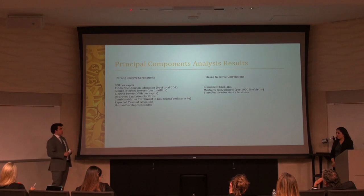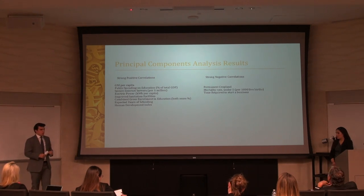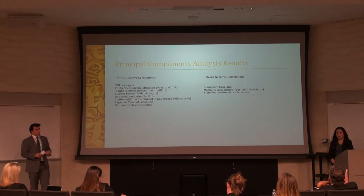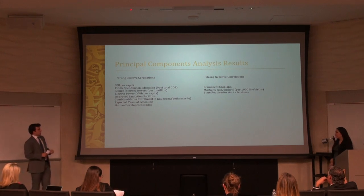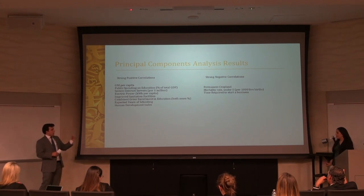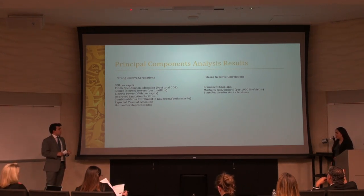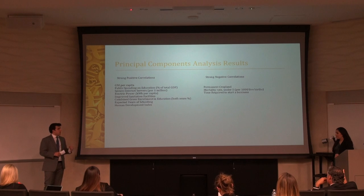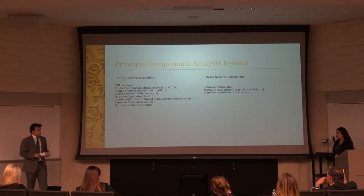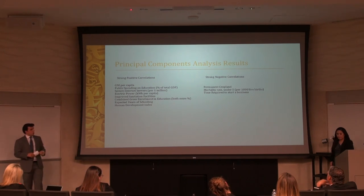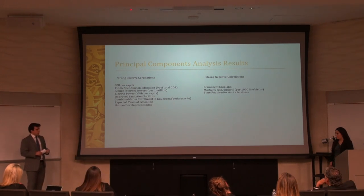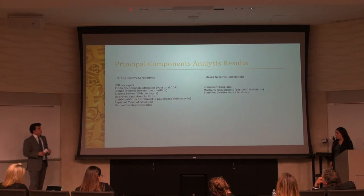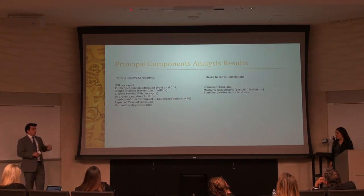Strong negative correlations to GDP included permanent cropland as a percentage of land area, mortality rate under 5 per thousand live births — a very strong negative correlation — and time required to start a business: the higher it went, the lower the GDP went.